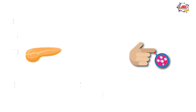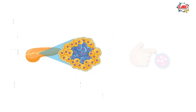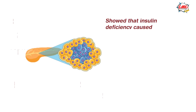Insulin is a hormone released by the islets of Langerhans into the bloodstream. It acts like a key to let sugar into cells for it to be used, therefore lowering blood sugar, and its deficiency was the cause of diabetes.